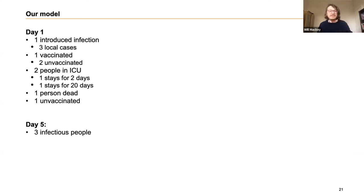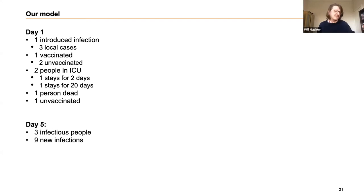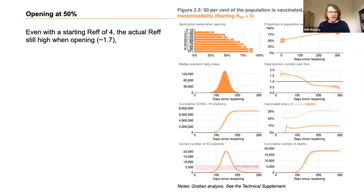We repeat that day after day. By day five, through the serial interval, those three infectious people may lead to nine new infections and so on. We run that over and over — our modeling ran for 300 days. There's a lot of complexity going in, but the story is quite easy to understand. We run the simulation multiple times and look at outcomes at varying vaccination rates.